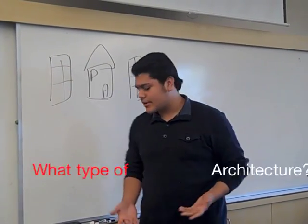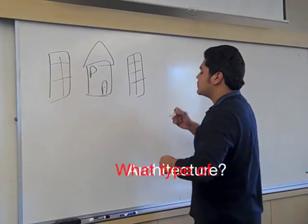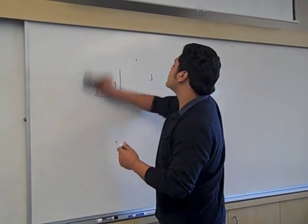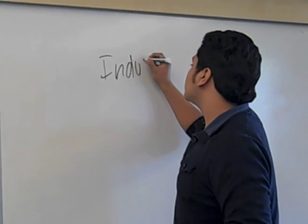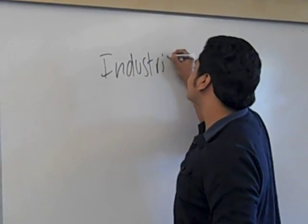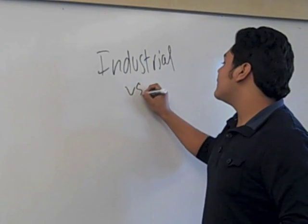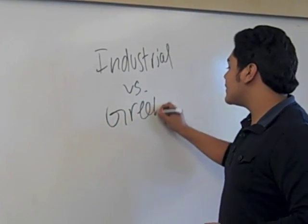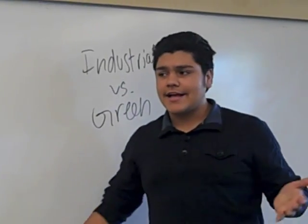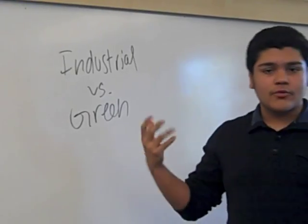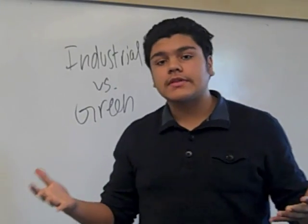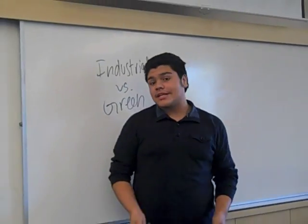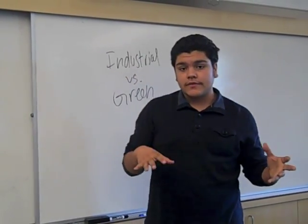Third, what type of architecture do you want to do — industrial versus green? This step is really important because you want to find the right materials to build your building. And then fourth, where do you want to build your building? Do you want to build it in the city, in the country, or in the suburbs? That's a really key part because it will determine the difficulty of your project.